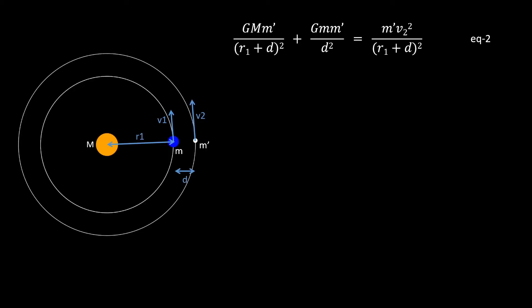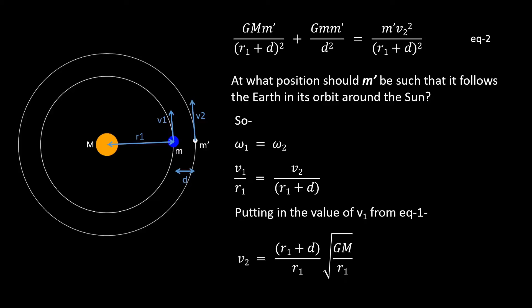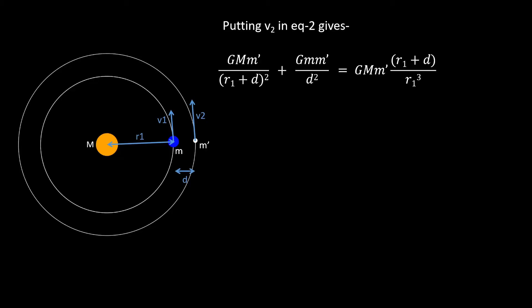The question is: at what position should the satellite be such that it follows the Earth in its orbit around the Sun? In other words, what is the value of d such that the angular frequency of the satellite's orbital motion matches that of Earth's orbital motion? Setting angular frequency ω1 equal to ω2 gives v1/r1 = v2/(r1 + d). Substituting v1 from equation 1 and solving for v2 gives v2 = (r1 + d)/r1 · √(GM/r1). Substituting this into equation 2, then cancelling G and m-prime from both sides and rearranging, we finally get the governing equation.